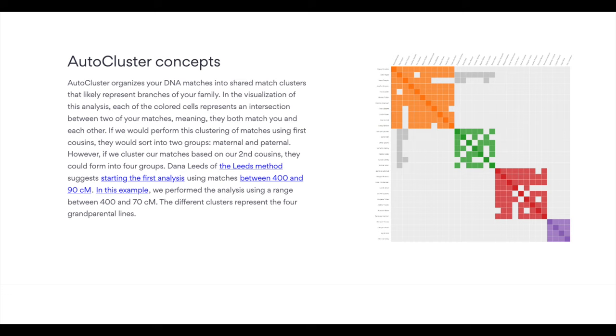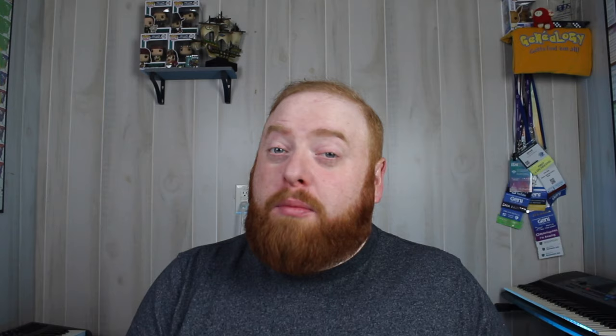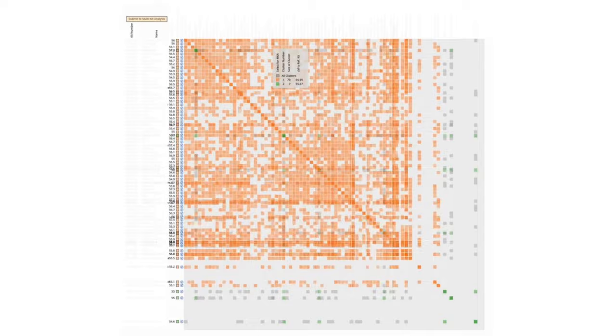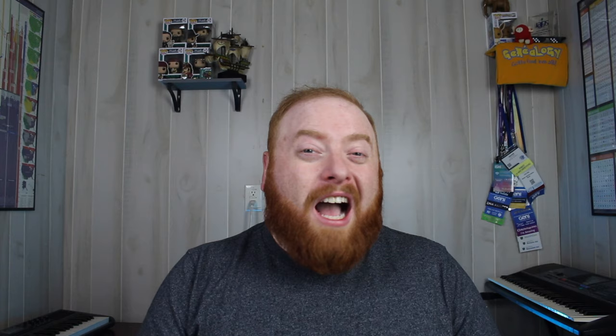The AutoCluster tool takes a person's DNA matches and clusters them together based on people matching each other, making it so each cluster represents a specific branch of the family. But the AutoCluster tool has a problem. People with certain types of ancestry won't be able to utilize the tool, such as Jewish populations, French Canadians, and more. The issue is that these populations have a history of endogamy — the practice of people from a certain population group only having children with others from that same population group. When this happens for many generations, the descendants of those population groups end up all being related to each other, many times in distant multiple ways.